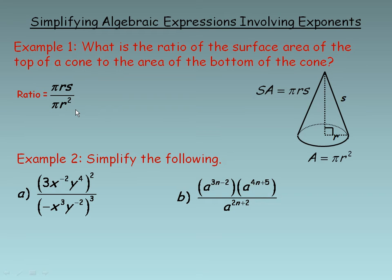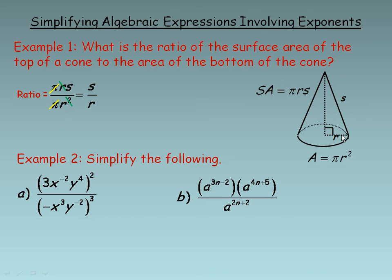First of all, the pi's will divide out. The r in the numerator will divide into the r squared in the denominator, leaving an r in the denominator. And so the ratio simplifies to s over r. So the ratio of the area of the top of the cone to the circle area in the bottom of the cone is just the ratio of the slant height to the radius.